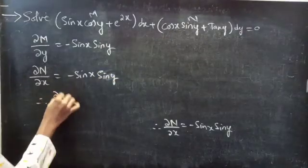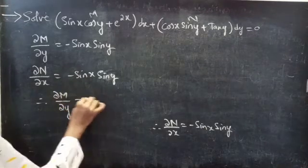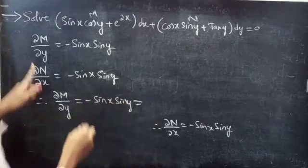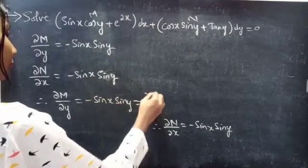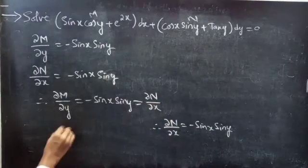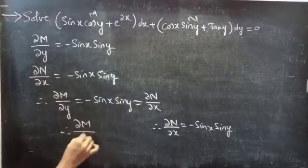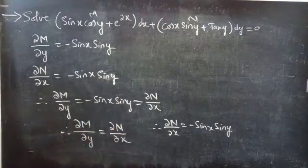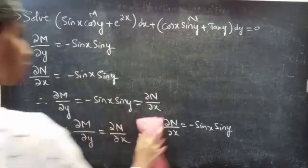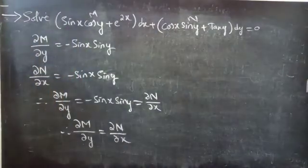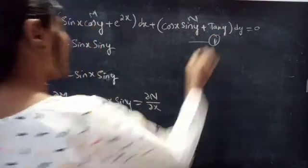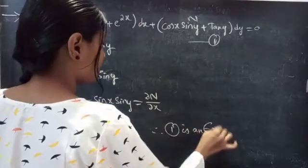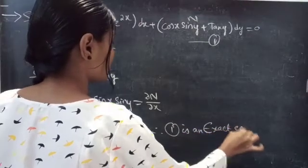Therefore ∂M/∂y equals minus sin x into sin y, which equals ∂N/∂x. Since ∂M/∂y equals ∂N/∂x, we can see that the given differential equation, equation 1, is an exact equation. Therefore equation 1 is an exact equation.